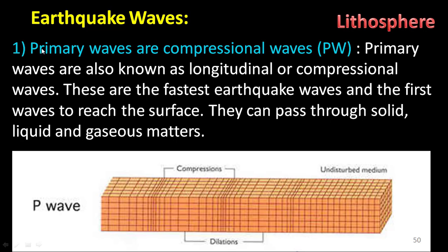Primary waves are also called longitudinal or compressional waves. These are the fastest earthquake waves and the first waves to reach the surface, which is why they are called primary waves. They can pass through solid, liquid, and even gaseous matter, which shows how powerful primary waves are.